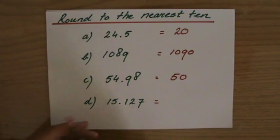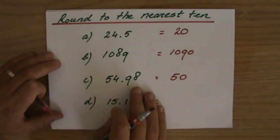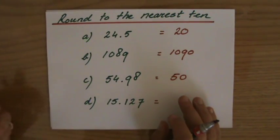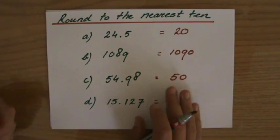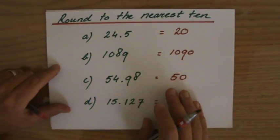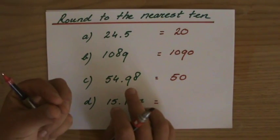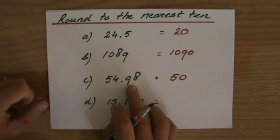Again, if you would draw a number line, 54.98 is simply closer than it is to 50 than it would be to 60. It's not a lot of difference, but it's slightly nearer to 50 than it is to 60.